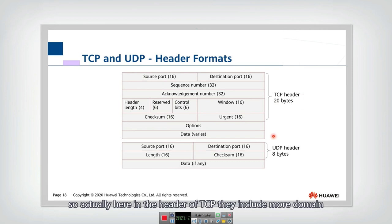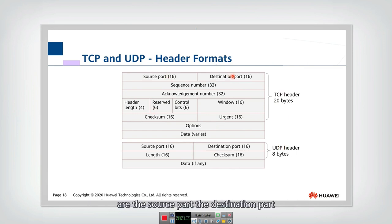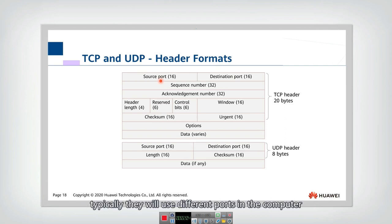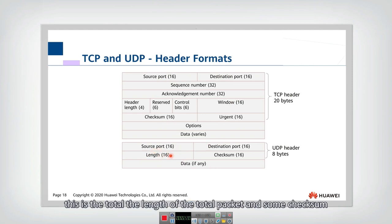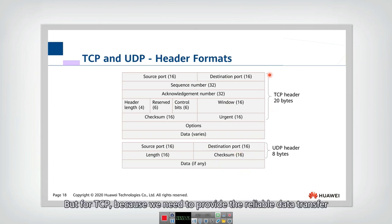In the TCP header, there are more fields. For example, the common fields for both TCP and UDP are the source port and destination port. Port numbers are very important because different applications use different ports. In both TCP and UDP headers, we have the source port, destination port, and in UDP there is also a length field representing the total packet length, and a checksum.